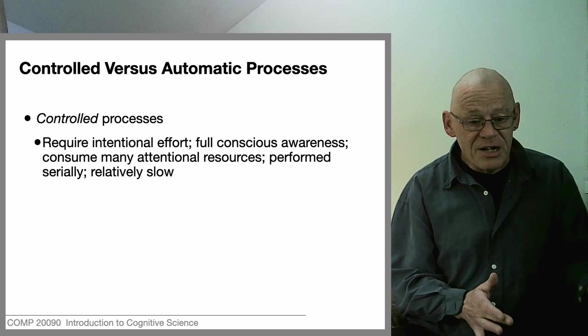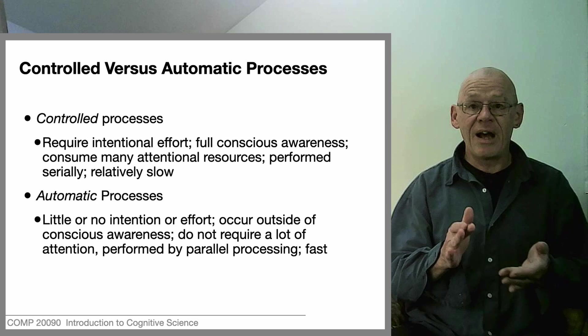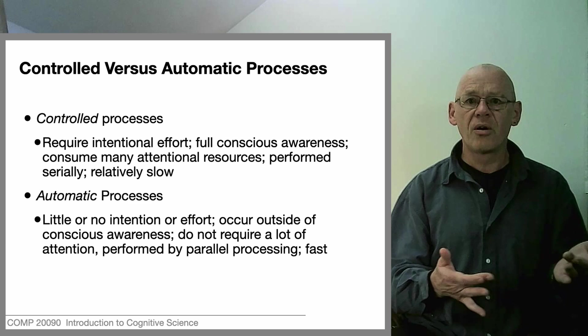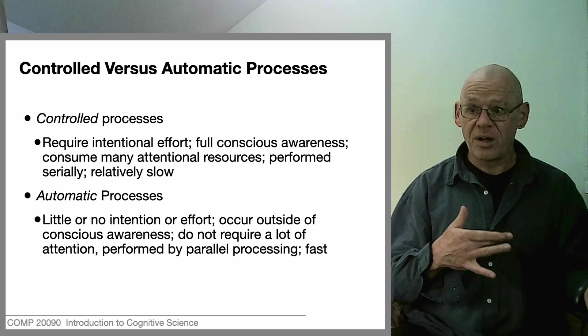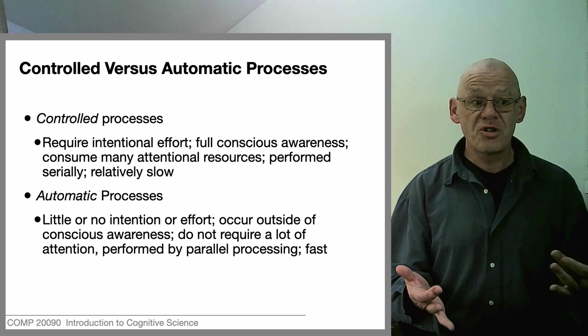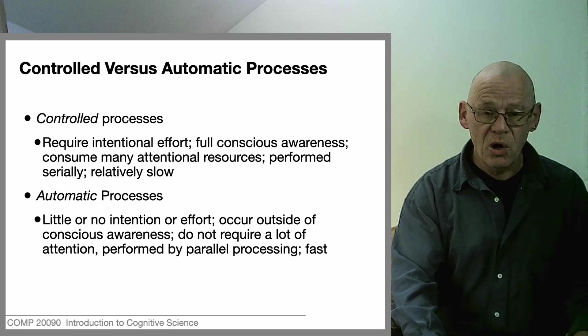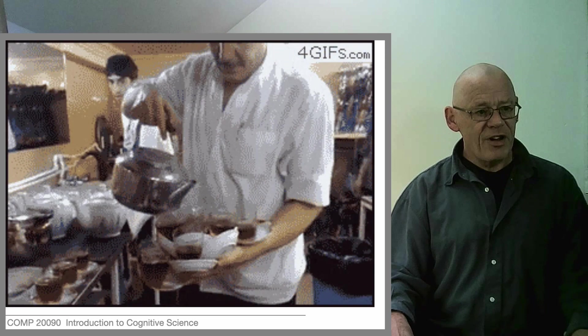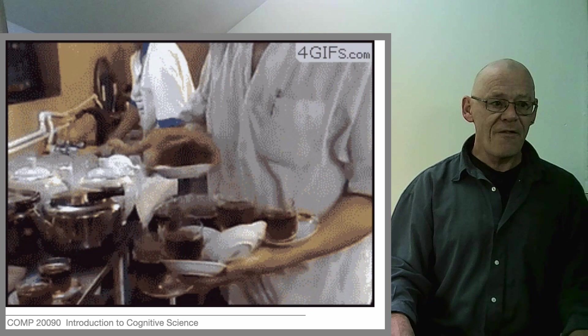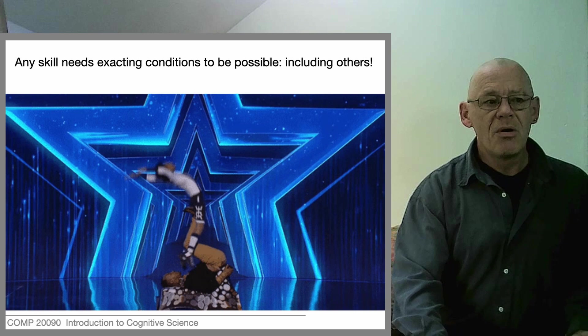As you get better at something, it becomes automatic — there's little or no intention or effort, movements become smooth and graceful, and very little seems to be going on consciously. You could be doing something that looks incredibly difficult to others and still hum a tune at the same time. Automatic processes are very fast compared to the slow nature of controlled processes. Consider this skilled use of a kettle and teacups — if he stopped to think about what he was doing it would be a mess. Or this skilled use of the hula hoop — there doesn't seem to be a lot of reflective awareness; it seems almost automatic.